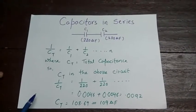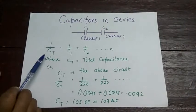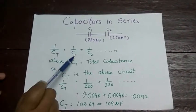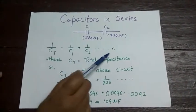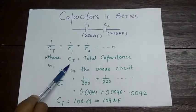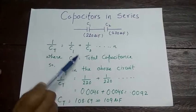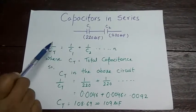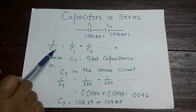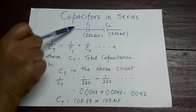Now for the series connection, the formula is: 1 by CT will be equal to 1 by C1 plus 1 by C2, for n number of capacitors, where CT stands for total capacitance. If you compare this formula with the formula for resistors, they are just opposite to each other.